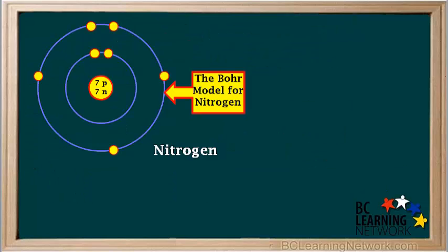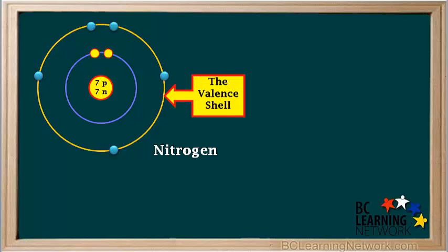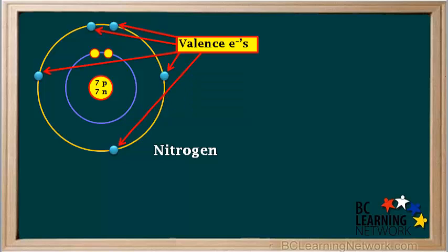Let's go back to the Bohr diagrams for a moment. This is the Bohr diagram for nitrogen. You can see that a nitrogen atom has seven electrons altogether. The valence shell is the outermost occupied shell. In nitrogen's case, it is shell number two. The valence electrons are the electrons that inhabit the valence shell. We can see that nitrogen has five valence electrons.